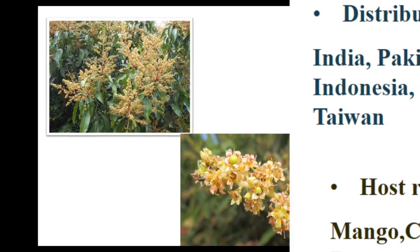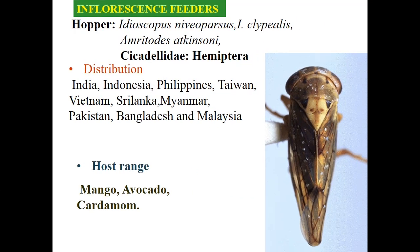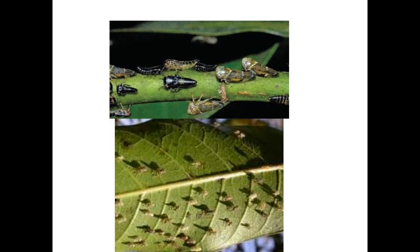The first pest is the inflorescence-feeding hopper. It comprises a three-species complex and is quite serious and specific to mango. The species are Idioscopus niveosparsus, Idioscopus clypealis, and Amritodus atkinsoni, belonging to family Cicadellidae, order Hemiptera. Some species are dominant and mainly attack during the flowering stage. In the off-season they are normally seen on bark, branches, or leaves.